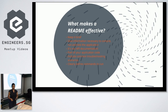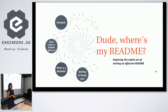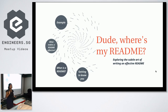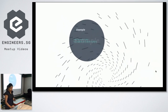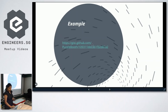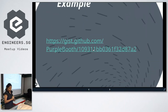Hopefully we've now agreed that we need READMEs, that we should all be looking at and writing READMEs. We've gone through what makes an effective README. The last thing to do is show you what I think an effective README might look like — I found an interesting template on GitHub.